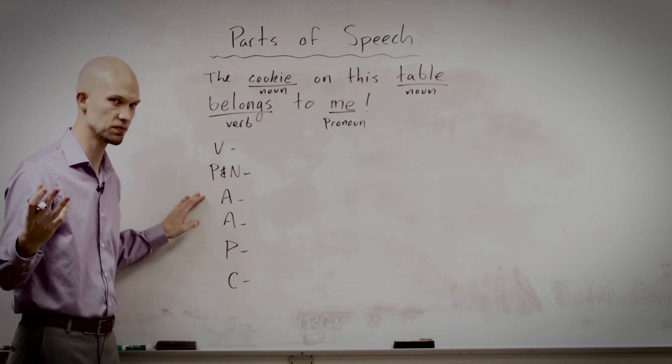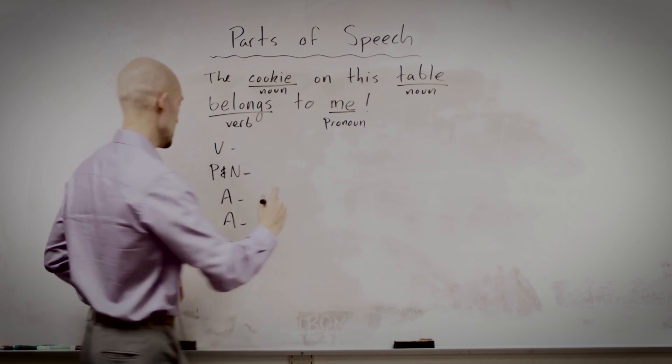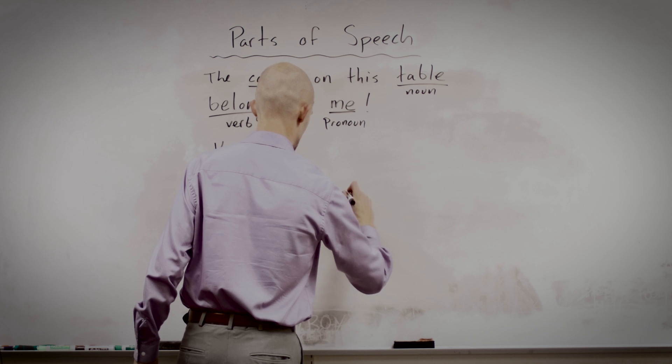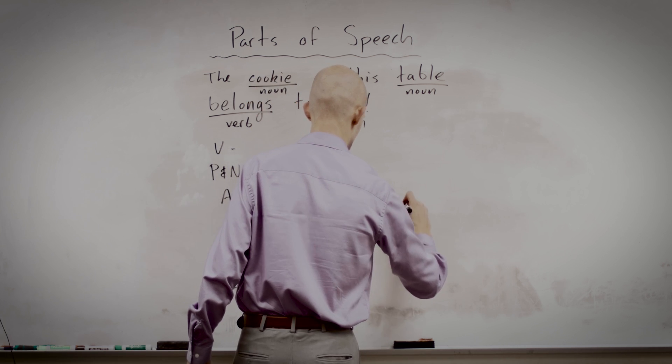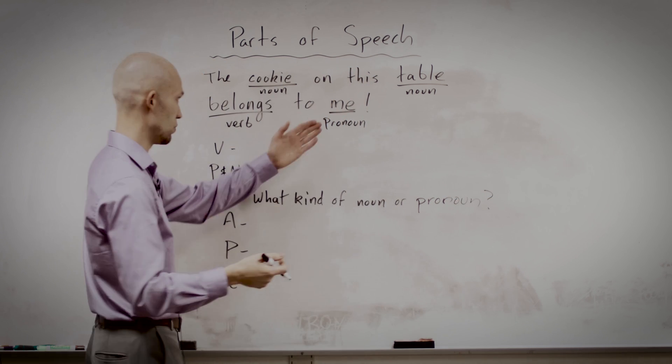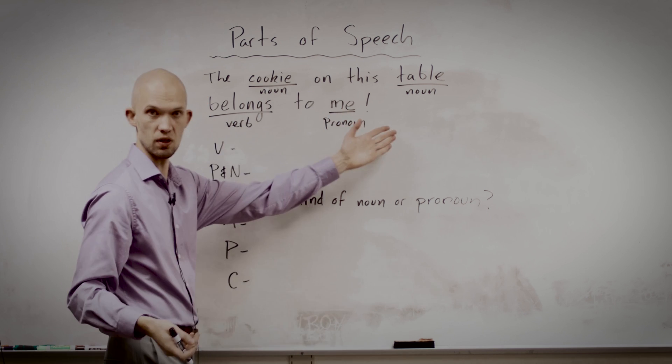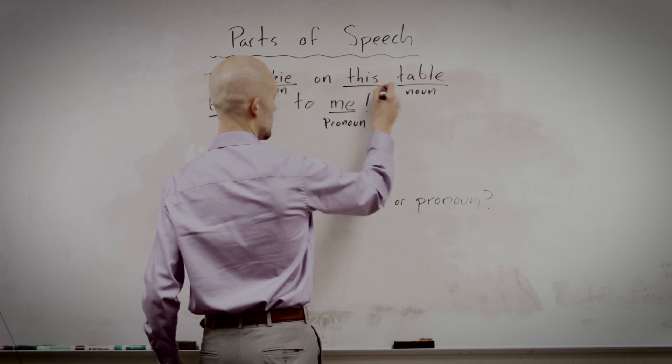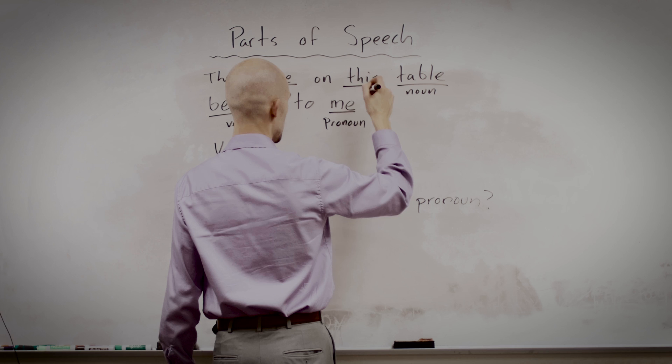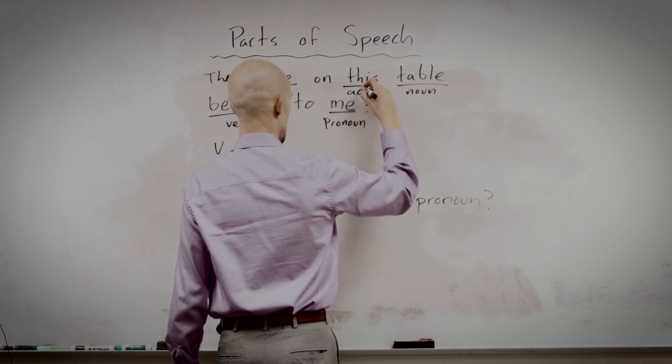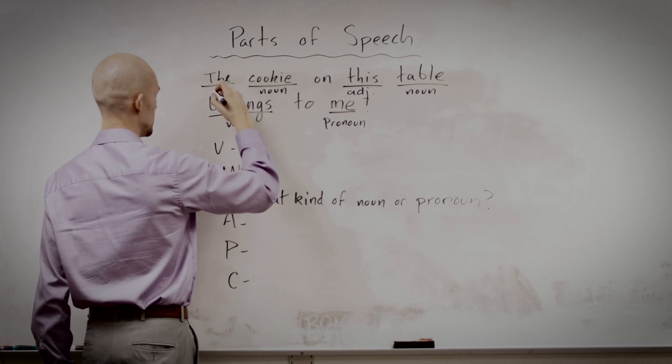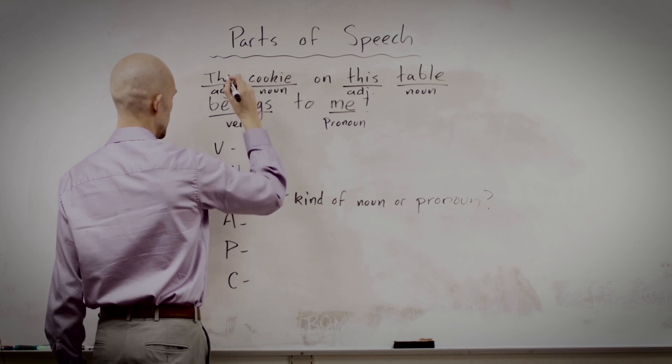What question do adjectives answer? That's right, what kind of noun or pronoun? Okay, so what kind of me? Not there. What kind of table? This table. This. It's not an article, but similar to it. This demonstrative adjective is telling you what kind of table. And just like in the last sentence, the word the is an adjective. Here, telling you what kind of cookie.